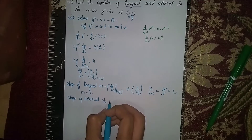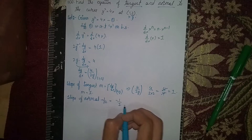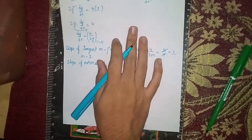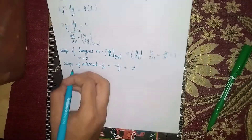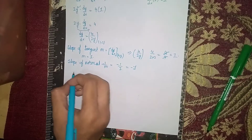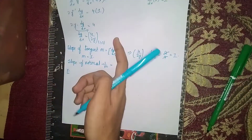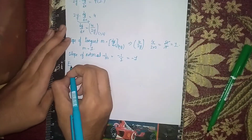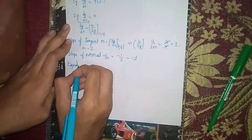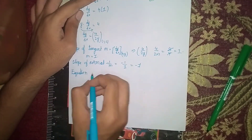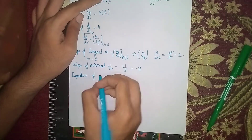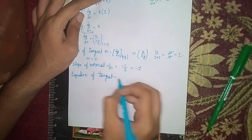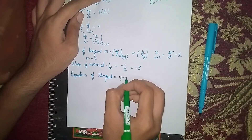The slope of normal is minus 1 by m, which equals minus 1 divided by 1, equals minus 1. Now we have to find the equation of tangent and then the equation of normal.